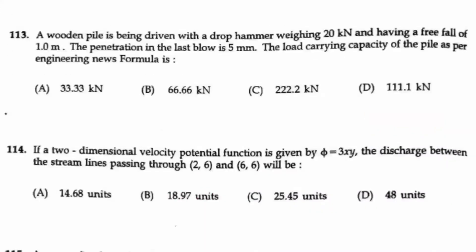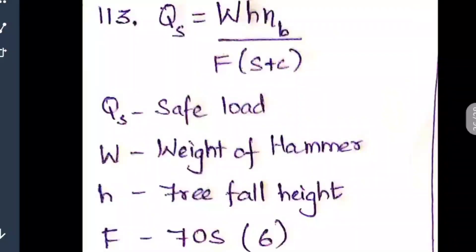Question number 113: A wooden pile is being driven with a drop hammer weighing 20 kN and a free fall of 1 meter. The penetration in the last blow is 5 mm. The load carrying capacity of the pile as per the Engineering News Formula is to be found. The formula is: Qs = W·H·ηb / [f(s + c)].